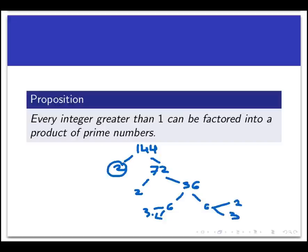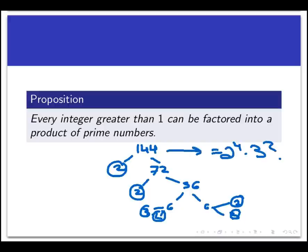So we've reached a stopping point now where all the endpoints of this little tree structure here are primes. Then we can begin to build up the answer. So 144's factorization is 2 to the 4th times 3 to the 2nd.